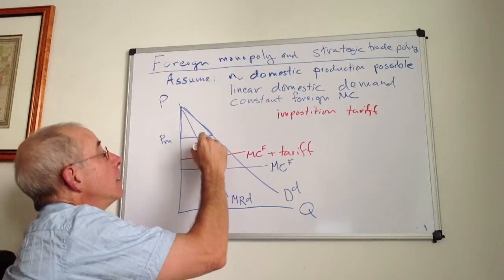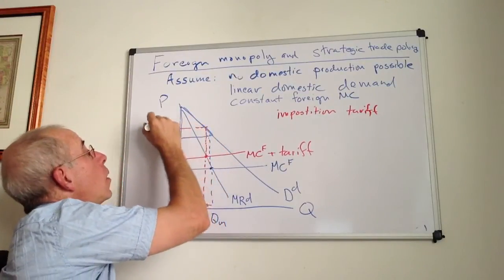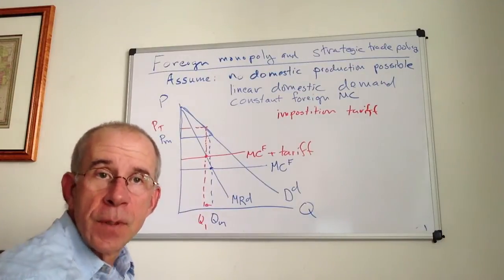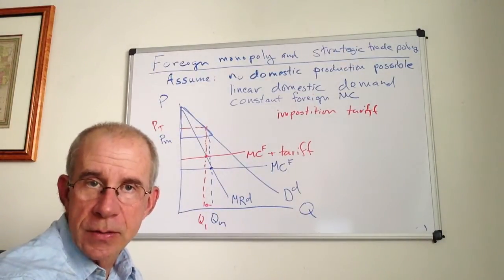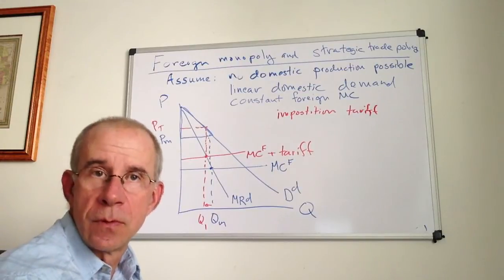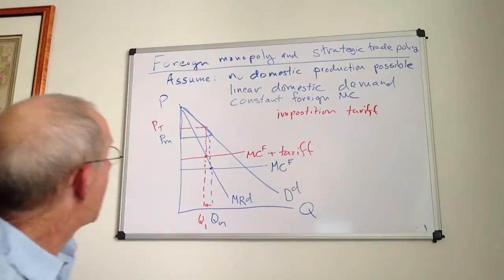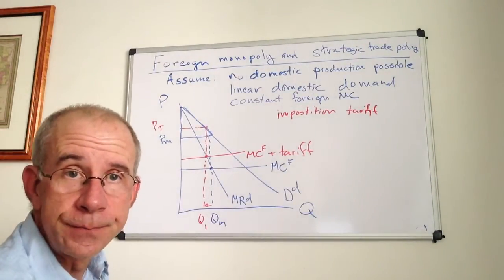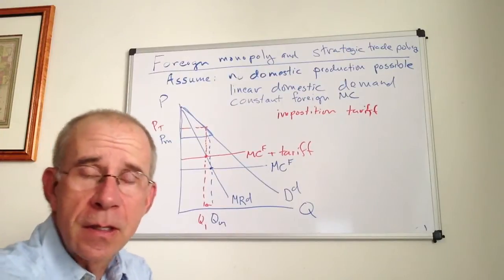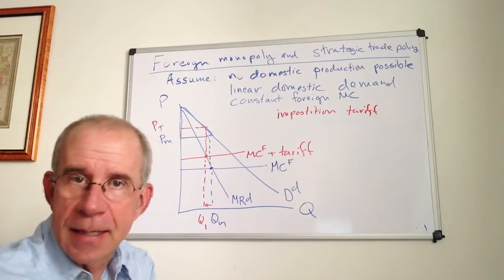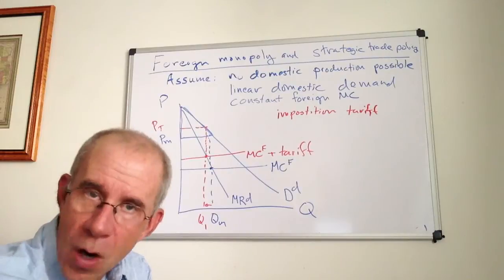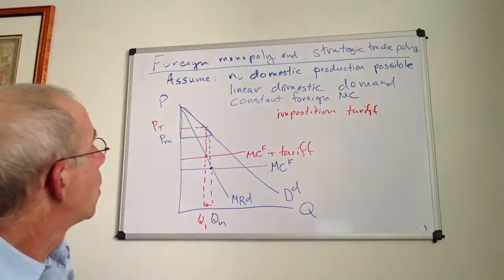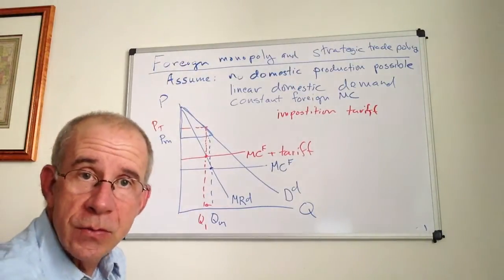And in addition, they'll choose ultimately to pass on at least some of that increase in the cost to the domestic consumers. So there'll be a higher domestic price as a consequence of the tariff. Now, they don't simply pass along the entire amount because they're the only firm. They've got to take into account the marginal revenue because they are acting as a monopolist. So what are the consequences for this policy?